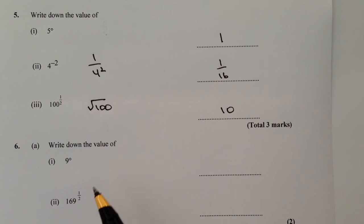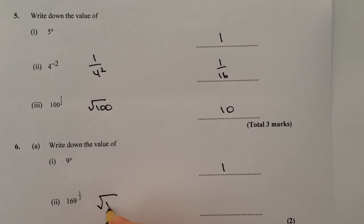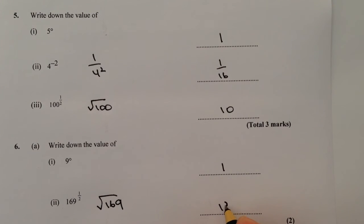OK, so again, write down the value of nine to the power of zero is going to be one. And 169 to the half, well, that's exactly the same as saying, as we mentioned before, the square root of 169, which is 13.